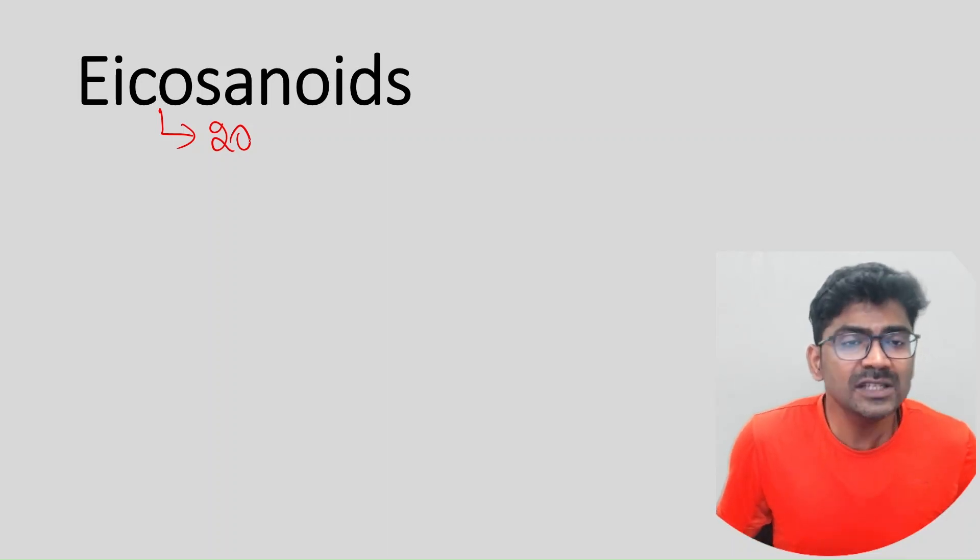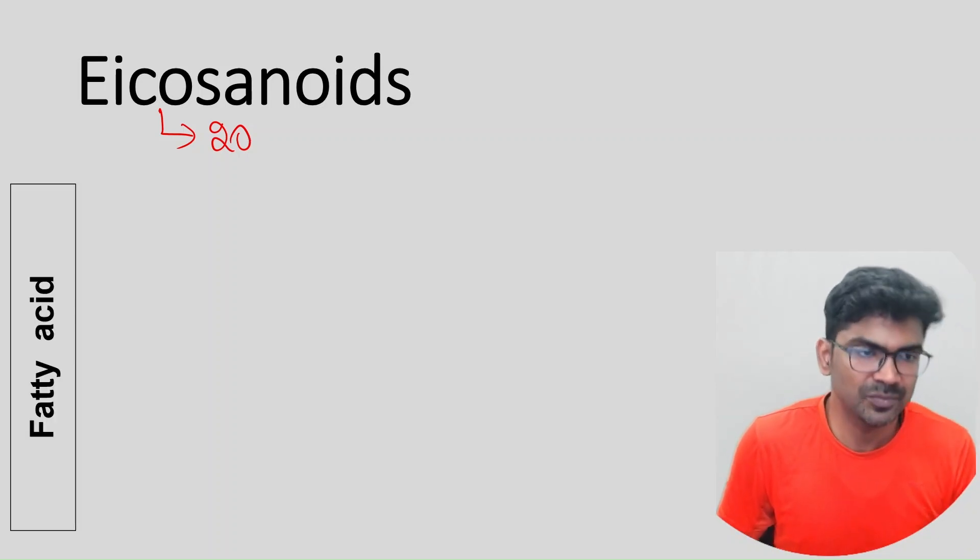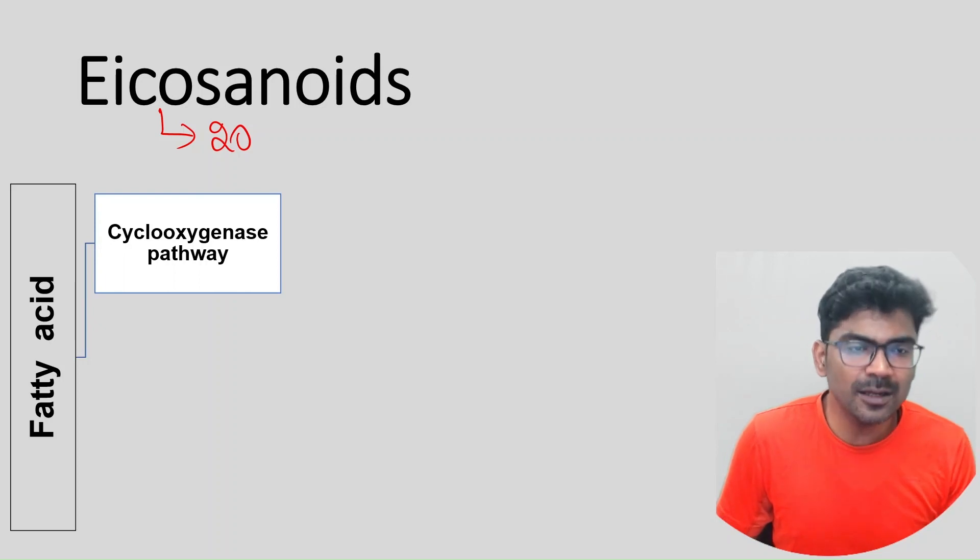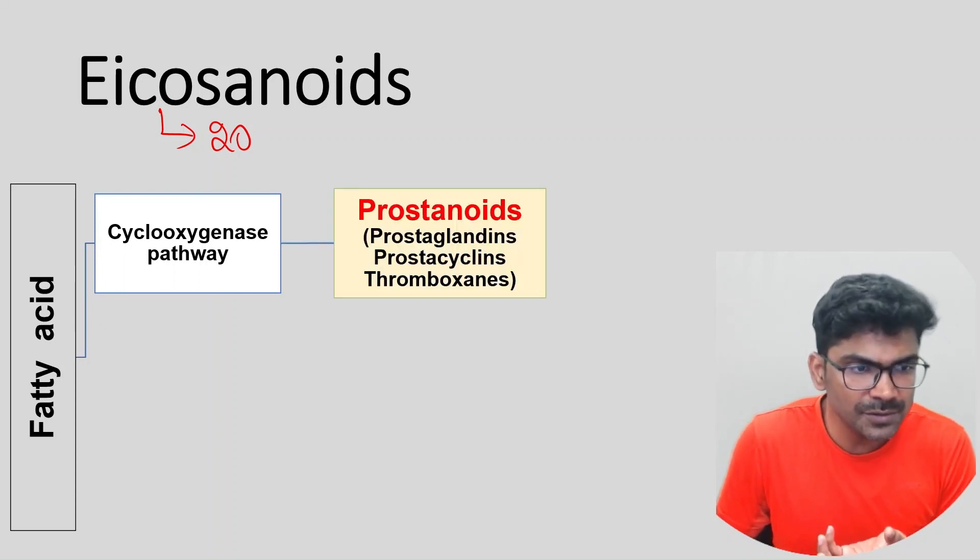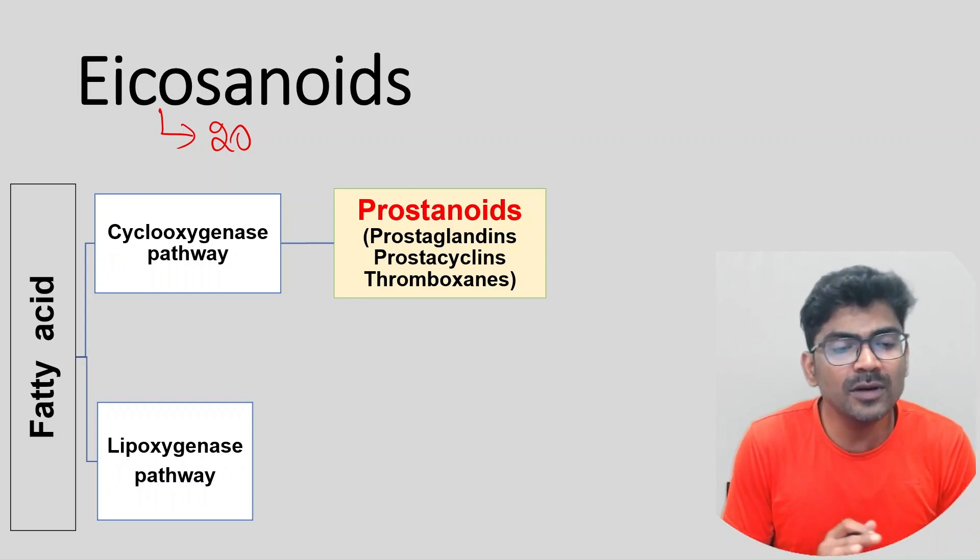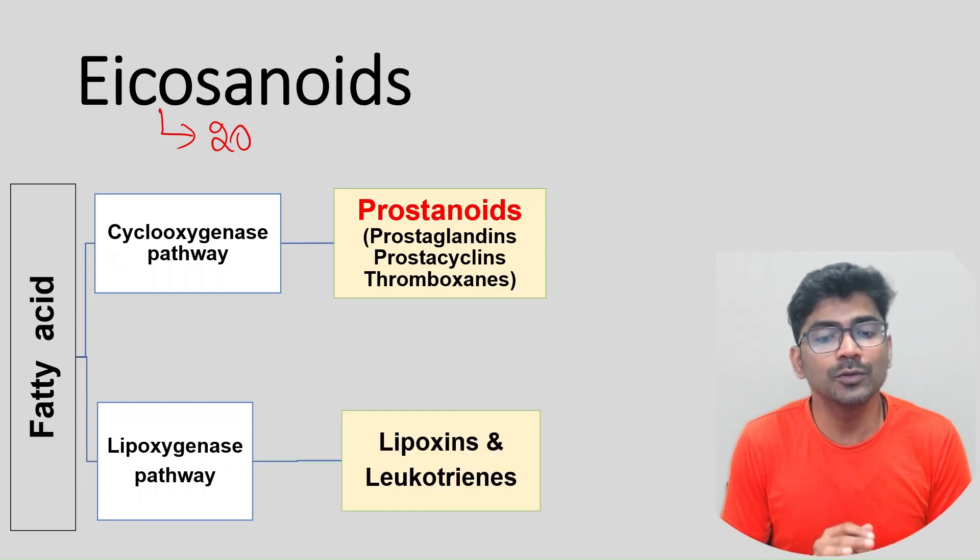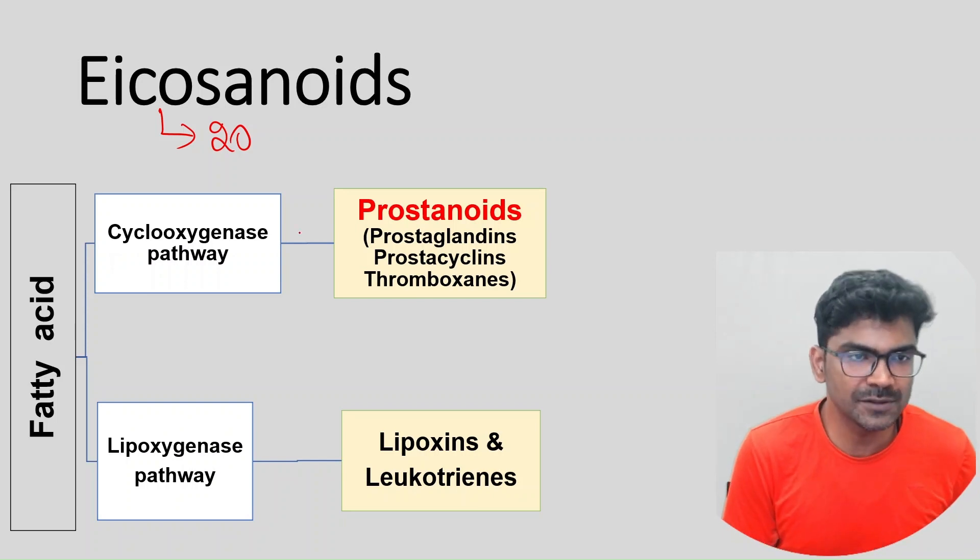Which is the substrate for eicosanoid synthesis? Fatty acids. Fatty acids are acted upon by cyclooxygenase pathway to produce prostanoids or lipoxygenase pathway to produce lipoxins and leukotrienes.